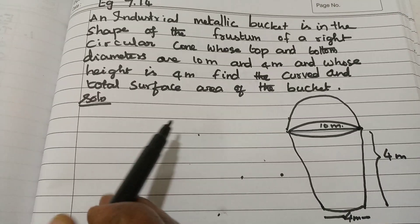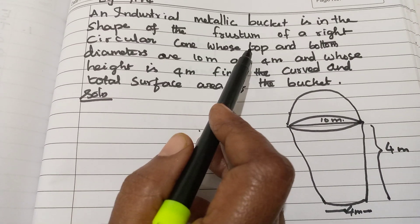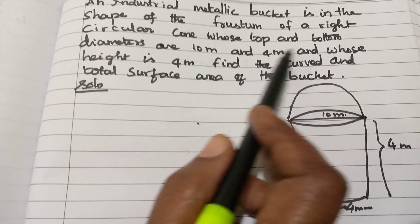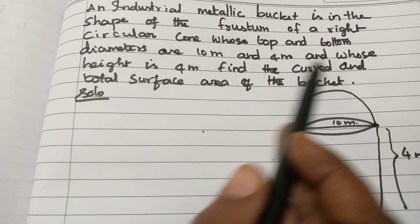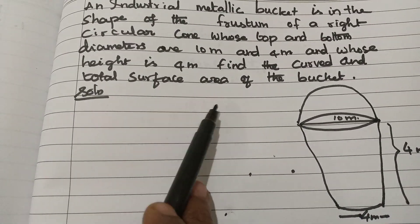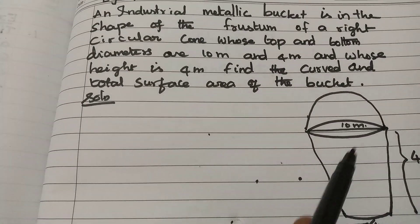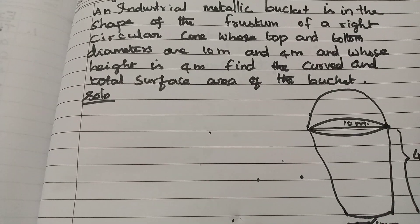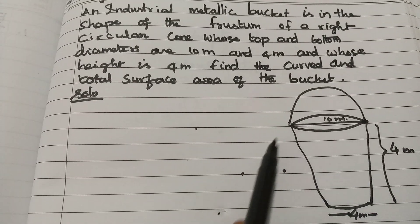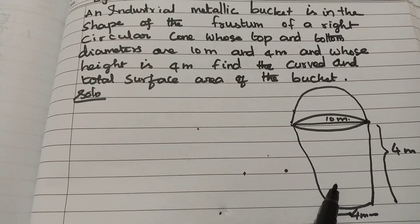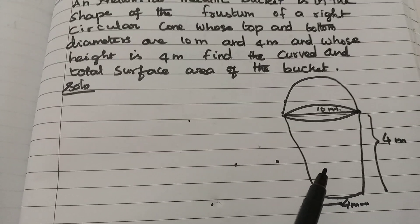Let's write example 7.14. An industrial metallic bucket is in the shape of the frustum of a right circular cone whose top and bottom diameters are 10 meter and 4 meter and whose height is 4 meter. Find the curved and total surface area. There is a frustum of a bucket given whose top diameter and bottom diameter is given as well as height also given.